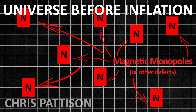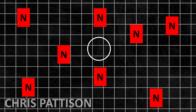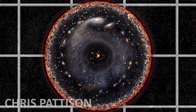Inflation simply says that no matter how dense the monopole population was, during inflation, the space in between the monopoles expanded so much that it left the monopoles so spread out in space that we'd basically never expect to see one. The potentially tiny space in between two magnetic monopoles is expanded so much during inflation that it could become the patch of space that grows into our entire observable universe.